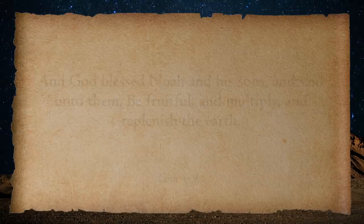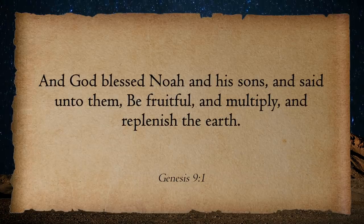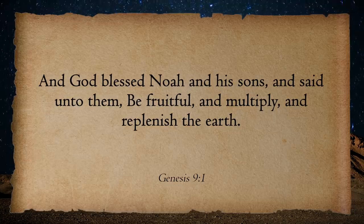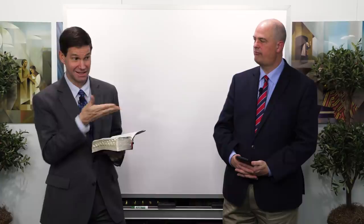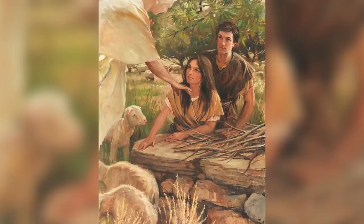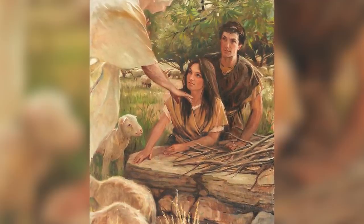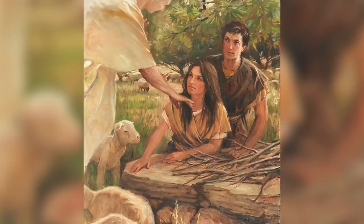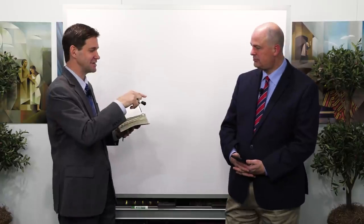That's a pretty big promise, which leads us to chapter 9 where God blesses Noah and his sons and said: 'Be fruitful, and multiply, and replenish the earth.' You'll notice that was the very first command given to Adam and Eve in the Garden of Eden, and it's still in force today — the same command given in the beginning and here at this new beginning, and it's given at a new beginning of a new family unit every time a man and a woman kneel across the altar in the temples of our God.